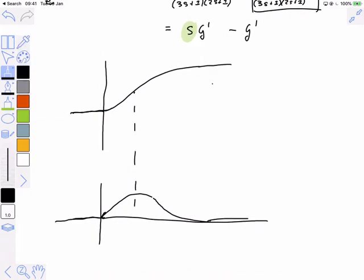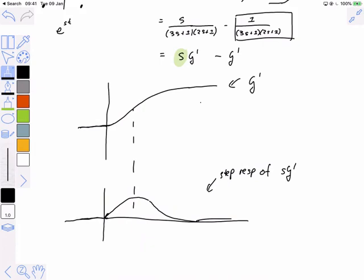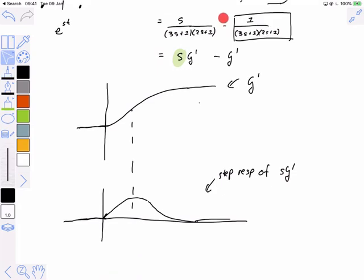If we now put that in here, this is the step response of SG prime, this is the step response of G prime. What does the combined step response look like? It's going to be mainly going down. Why am I saying it's mainly going down? Because I'm subtracting that step response. Does everybody see there's a minus over there?